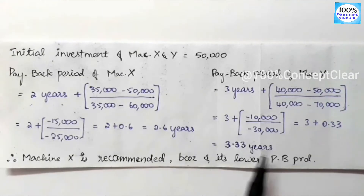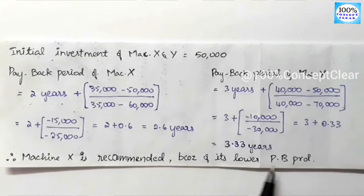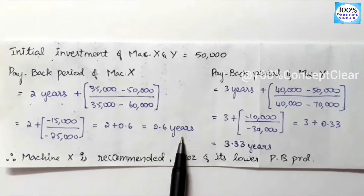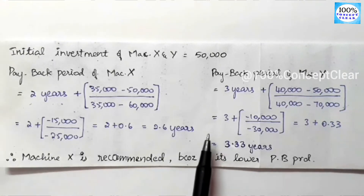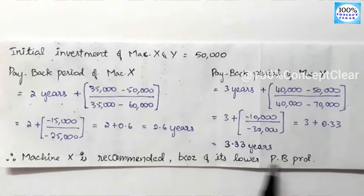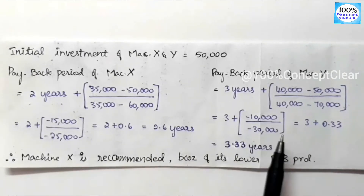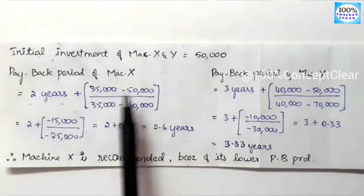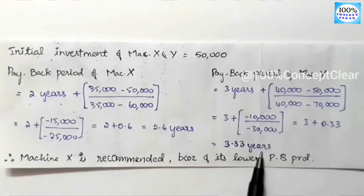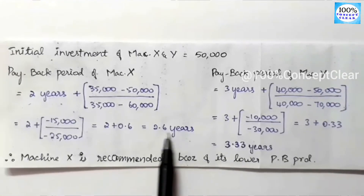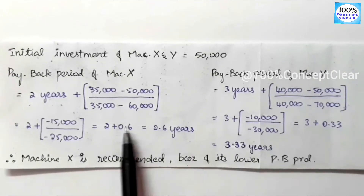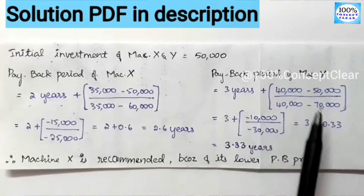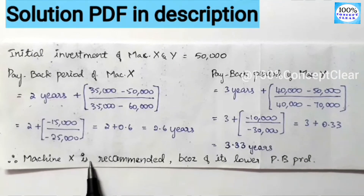Now we make the decision. We compare the two machines: Machine X is 2.6 years and Machine Y is 3.33 years. The payback period that is lower is better, because it means we recover our investment faster. Comparing the two, Machine X has the lower payback period of 2.6 years, so Machine X is recommended. Therefore, Machine X is recommended because of its lower payback period.